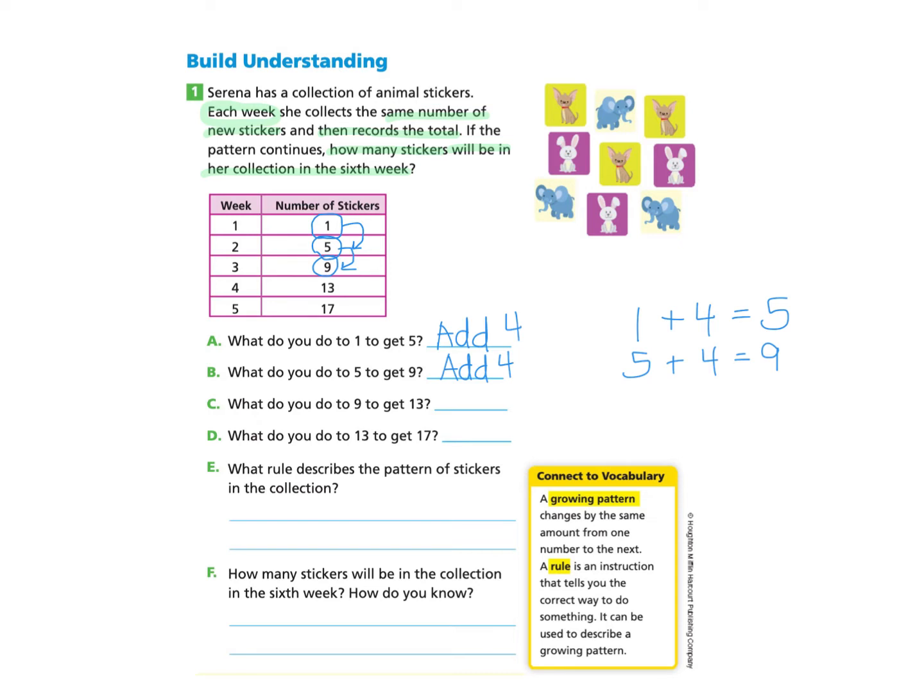Let's take a look at Part C. What do you do to 9 to get 13, which is our next number? If you'd like to pause, you may. And when you come back, you will find that you add 4 because 9 plus 4 makes 13. Part D asks, what do you do to 13 to get to 17? So again, if you'd like to pause, you can. And when you come back, again, you'll find to add 4 because 13 plus 4 makes 17.